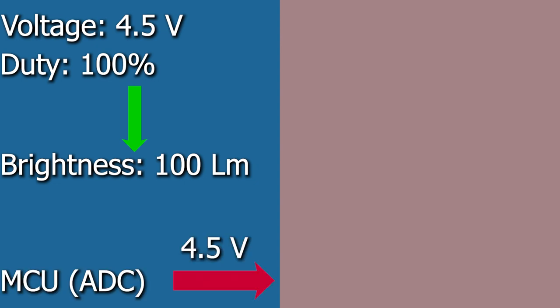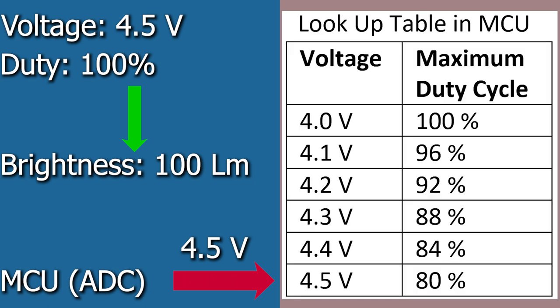In its lookup table in the memory, 4.5V corresponds to only 80% duty cycle, so it adjusts the maximum duty cycle limit to 80% correspondingly. Now with such a duty cycle, the maximum brightness that can be achieved at this voltage is only 80 lumens.